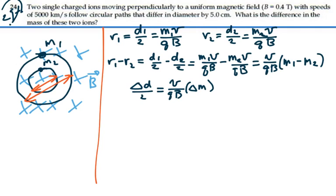We want to find the difference in the mass. So we're going to say the difference in the mass is equal to the difference in the diameter times the charge times magnetic field divided by 2 times the velocity. Just solving for the unknown.